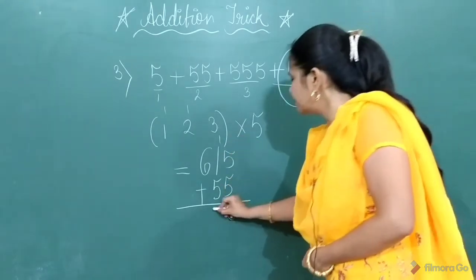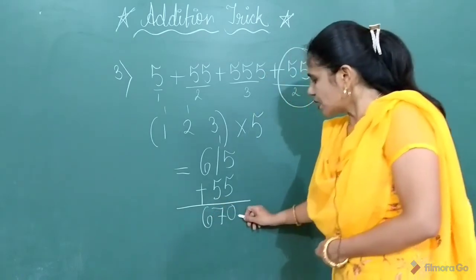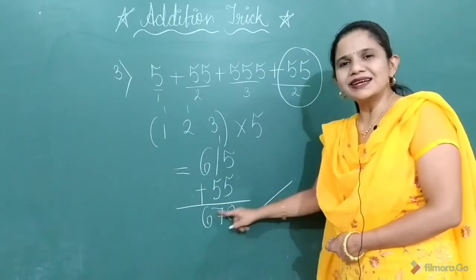1 plus 1, 2 plus 5, 7 and 6. So what answer you will get? 670.